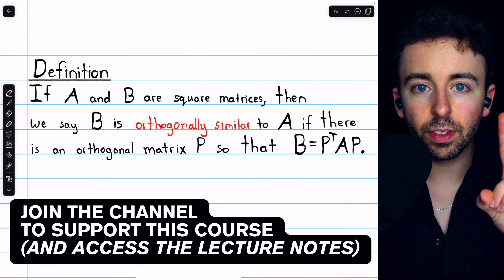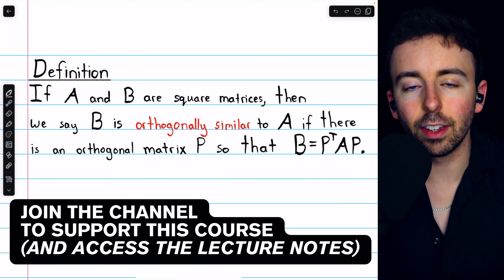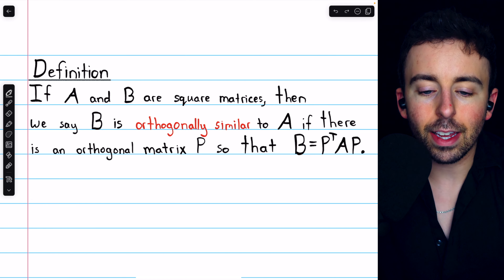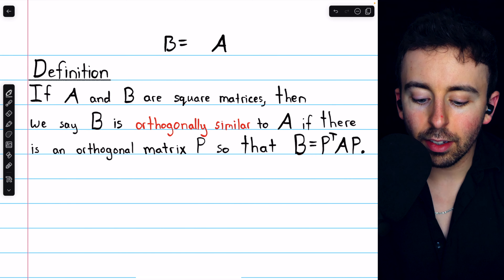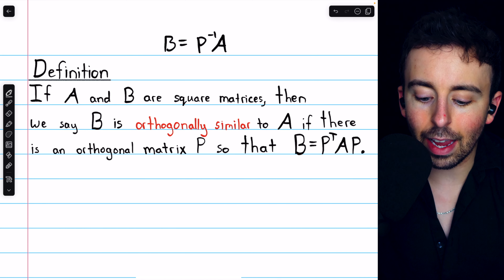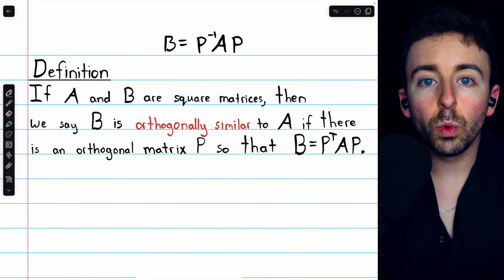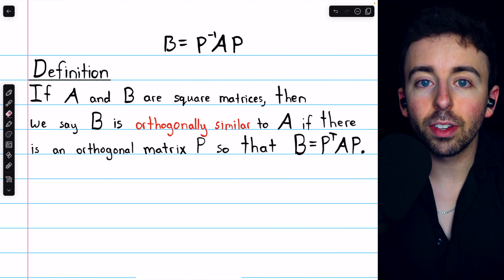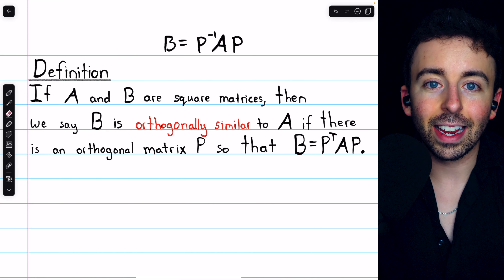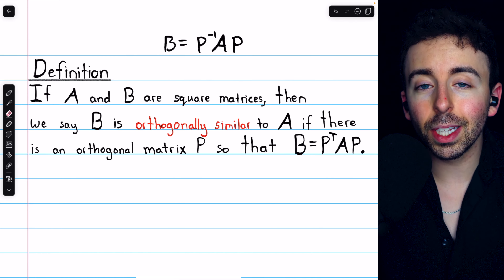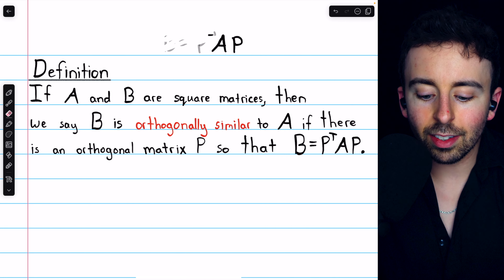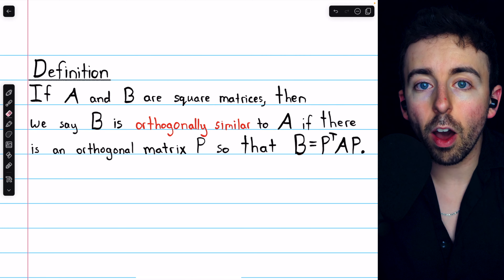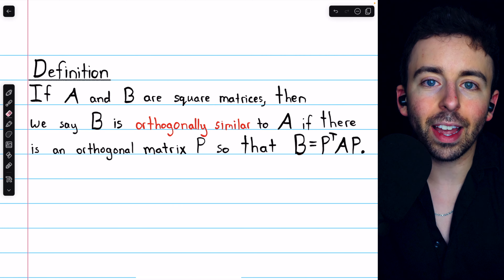We previously introduced the idea of similar matrices. We said that a matrix B is similar to a matrix A if there exists some matrix P so that B is equal to P inverse AP. We saw how useful this could be if we found similar diagonal matrices, because a diagonal matrix is really simple and similarity preserves a lot of properties between matrices. In this video we'll extend both of those ideas and cover orthogonal similarity and orthogonal diagonalization, as well as proving some relevant theorems.